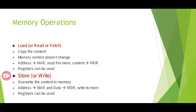Memory is a storage mechanism. We can divide the storage area or memory into a large number of memory cells, and each memory cell is addressed by using a unique identifier known as a memory address. The two main memory operations are the read operation and the write operation.